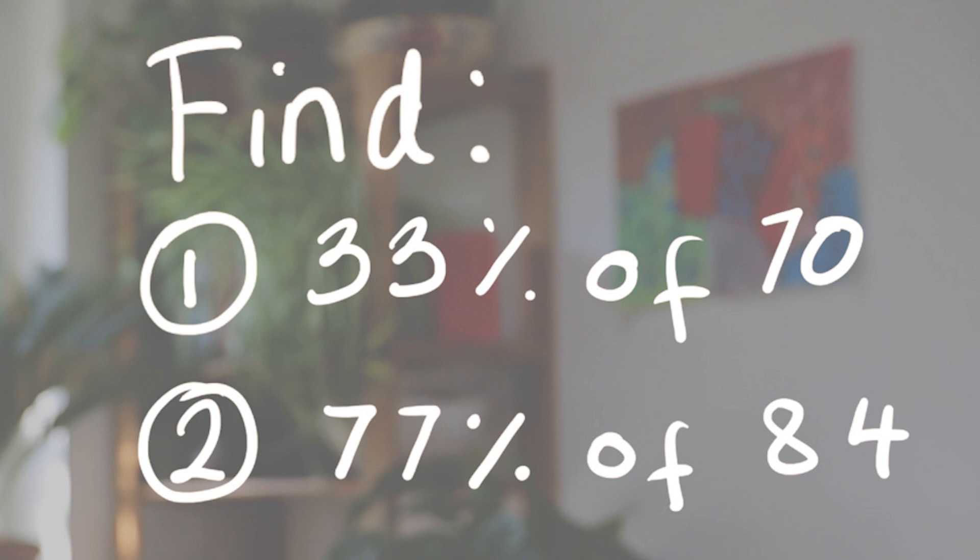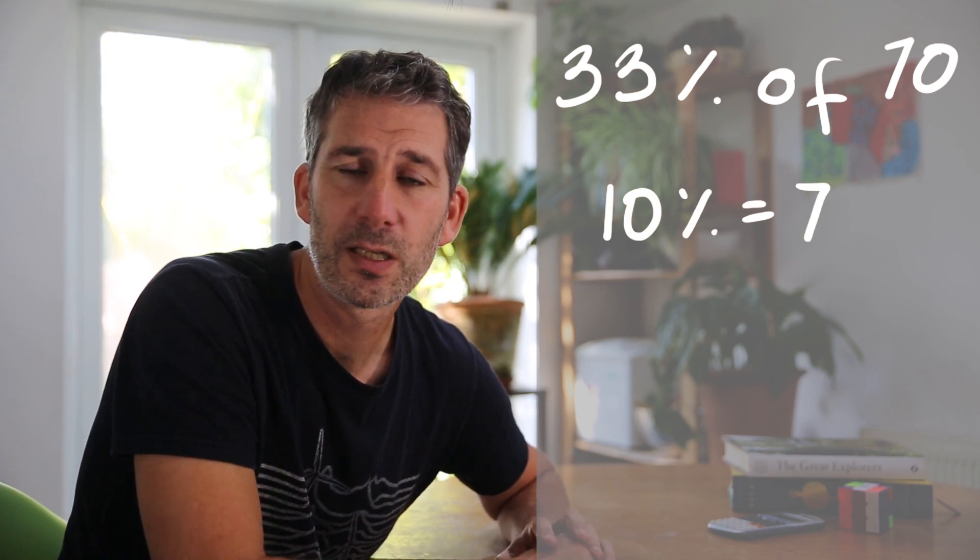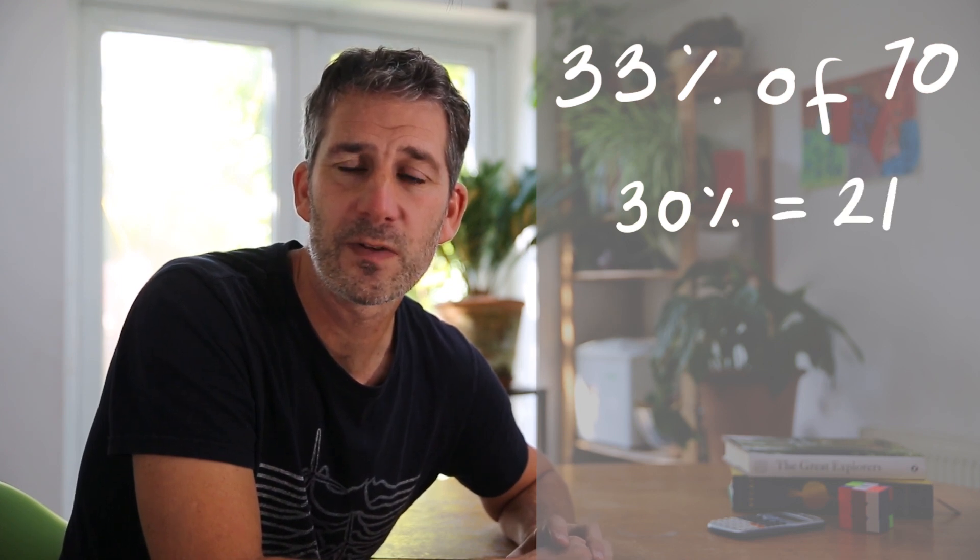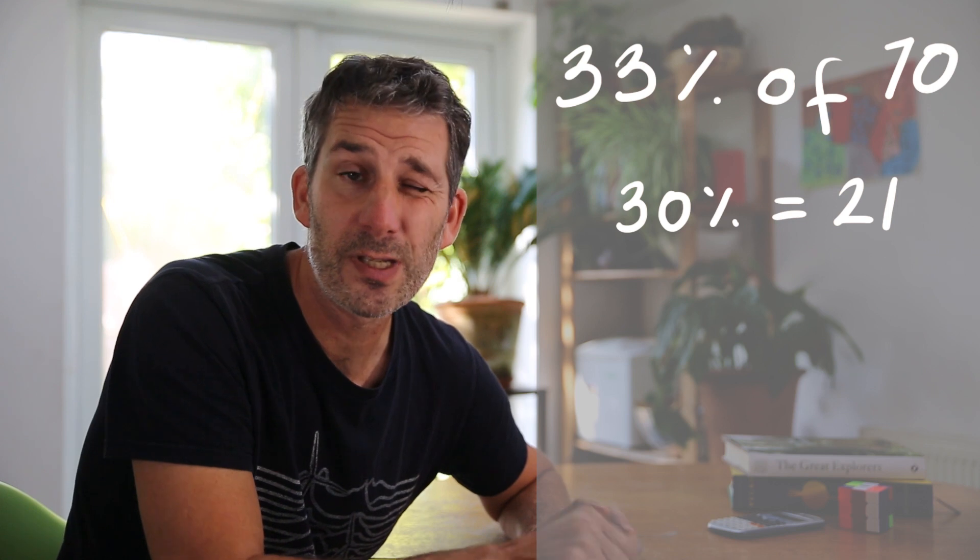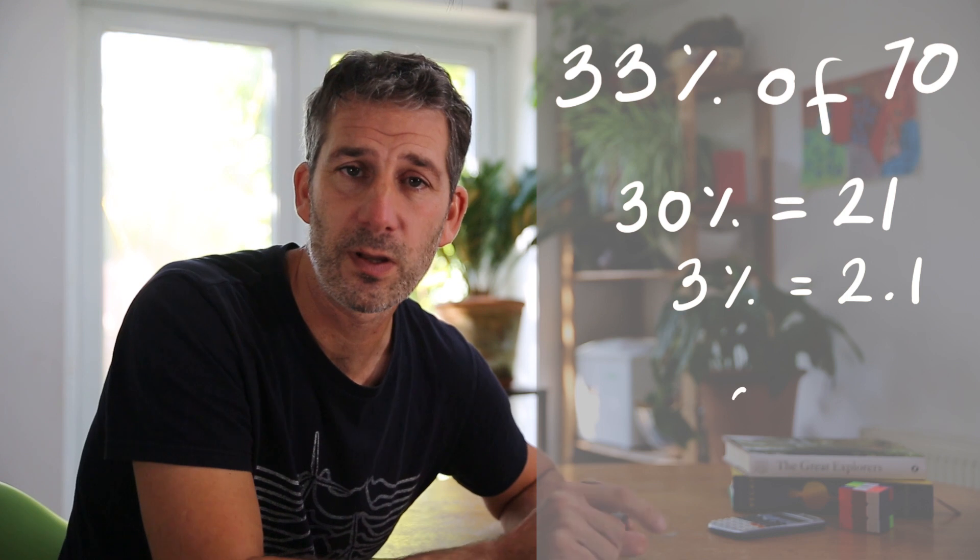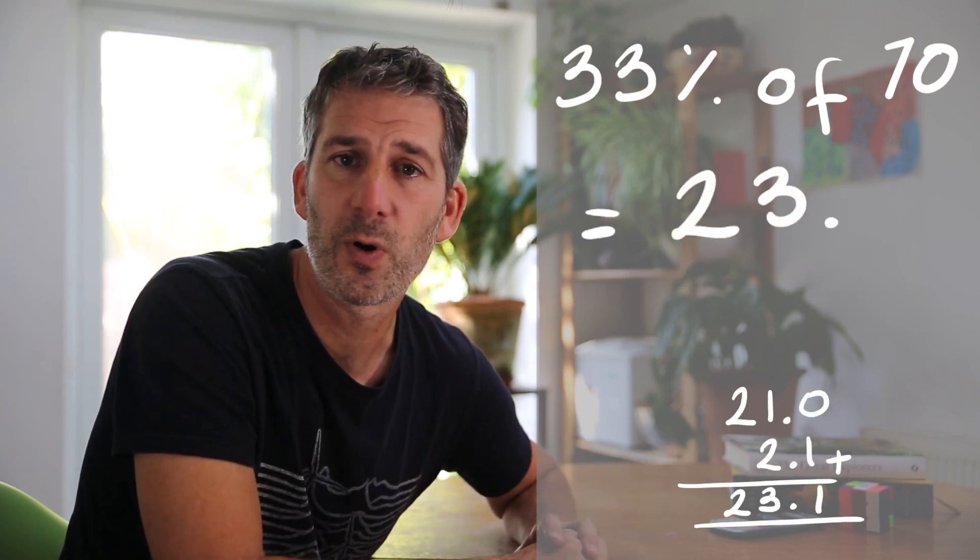So the first one, we're trying to find 33% of 70. So I would find 30%, then divide it by 10 to find 3%, and then I'd add those two things together. So 10% of 70 is 7, so 30% is going to be three times bigger, so that's going to be 21. And then if 30% of 70 is 21, then 3%, I've got to divide that by 10, so that's going to be 2.1. Then to find 33%, I add those two together, so I've got 23.1.